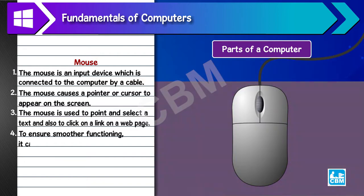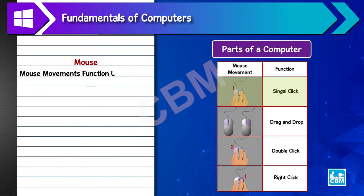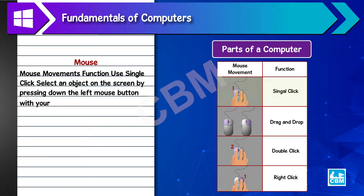4. To ensure smoother functioning, it can be placed on a mouse pad. 5. The mouse movements function: Single click - select an object on the screen by pressing down the left mouse button with your index finger once and then releasing the button.